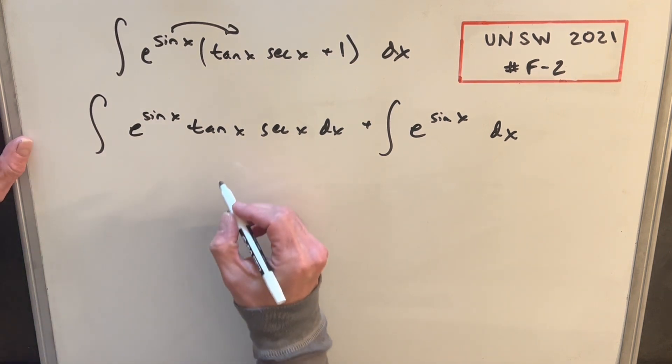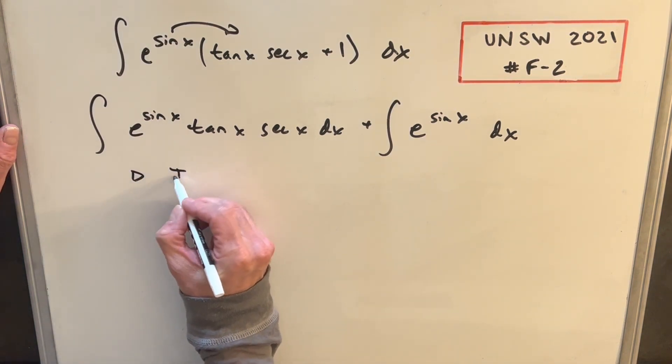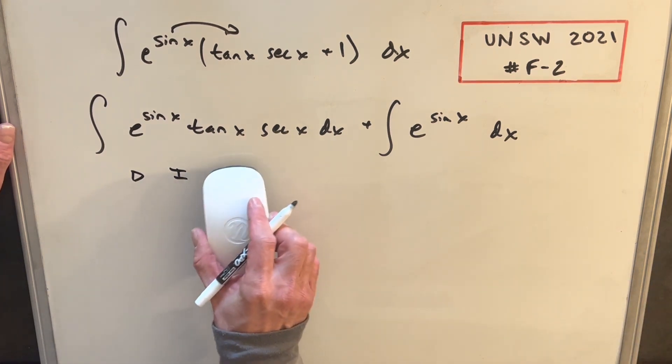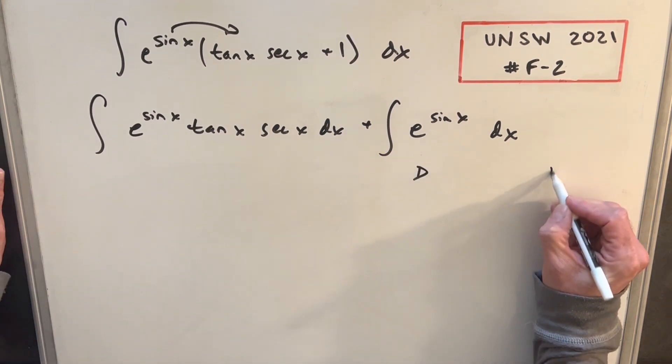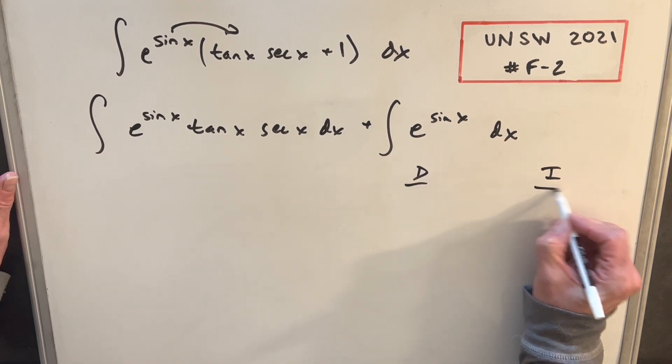So what I can do is we'll set up our DI table. So for integration by parts, what I'm going to do is I want to use the DI method or tabular integration. So we're going to have two columns, one to differentiate and one to integrate.